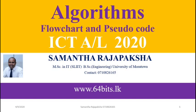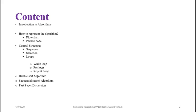We are going to discuss initially what is an algorithm, what is its purpose, why we develop algorithms, and what are the applications. Then we discuss two methods of representing algorithms: flowcharts and pseudocode. Then we will discuss control structures - sequence, selection, and loops. Under loops we will discuss while loop, for loop, and repeat loop.